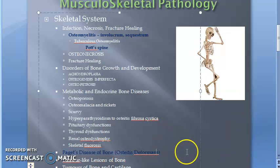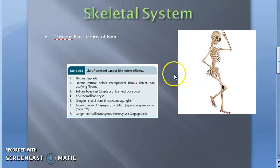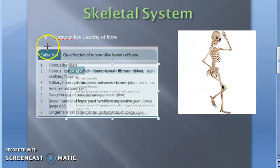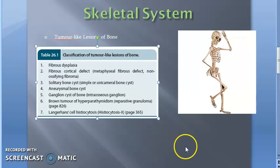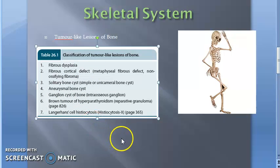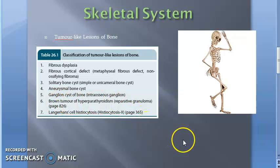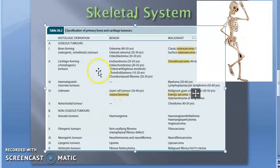Coming to tumor-like lesions of bone, nothing has been asked in the exam, but you should know what they are: fibrous dysplasia, cortical defect, bone cyst, ganglion cyst, Langerhans cell histiocytosis, and brown tumor of hyperparathyroidism.